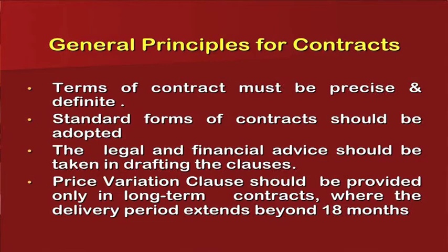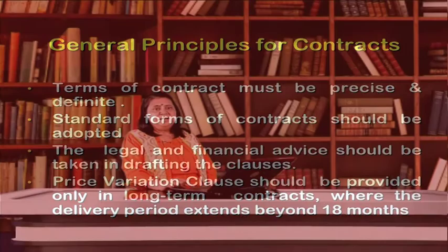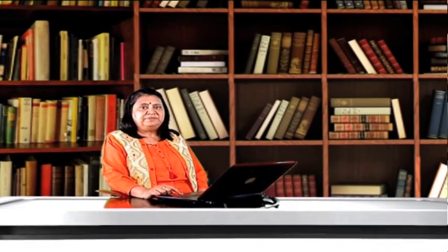Now let us study the general principles for contracts. The terms of the contracts must be precise and definite. Standard forms of contracts should be adopted. Legal and financial advice should be taken in drafting the clauses. Price variation clause should be provided only in long term contracts where the delivery period extends beyond 18 months. There are certain principles where when drafting contracts they should not be very lengthy, they should be precise, definite, they should be understood, there should be no leakage, no loophole, no gap area. Every aspect, even the brands should be covered because when you specify the brand then the price becomes definite. You must have the capping for the price and the time slot should also be agreed upon.